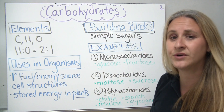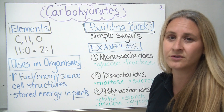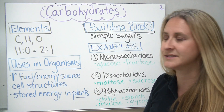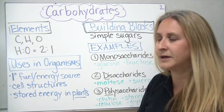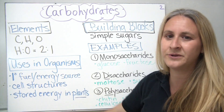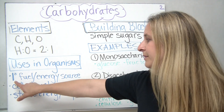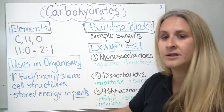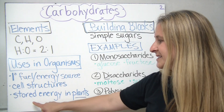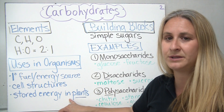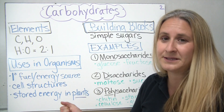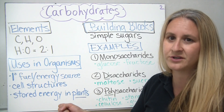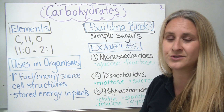The building blocks of carbohydrates are called simple sugars — we could also call them single sugars, made up of just one sugar compound. The uses in organisms for carbohydrates are quite varied. The main thing is that most organisms use carbohydrates as a primary fuel or their main energy source, especially in humans. Carbohydrates also make up cell structures and are used as stored energy in plants. Potatoes are a great example of a plant's stored energy in terms of starch.